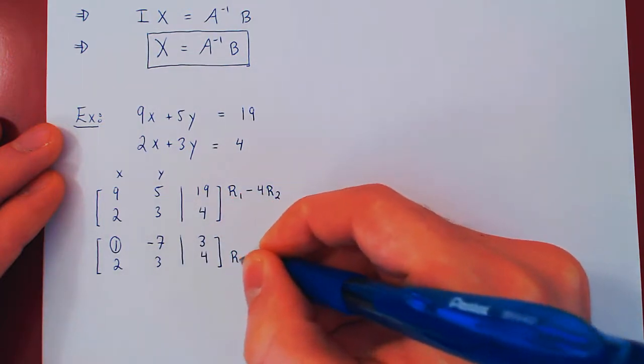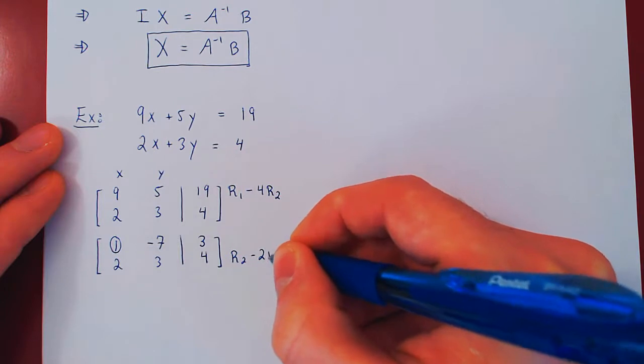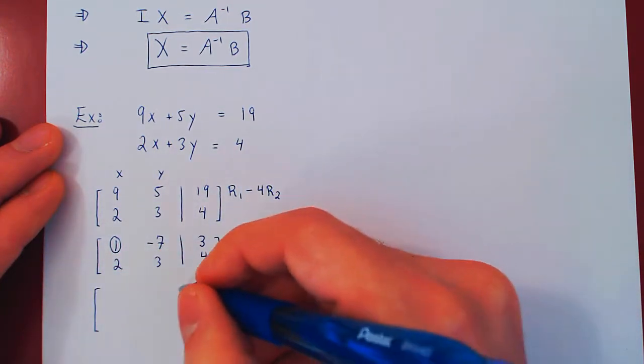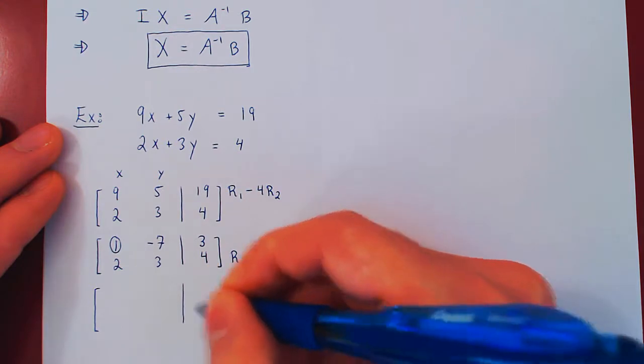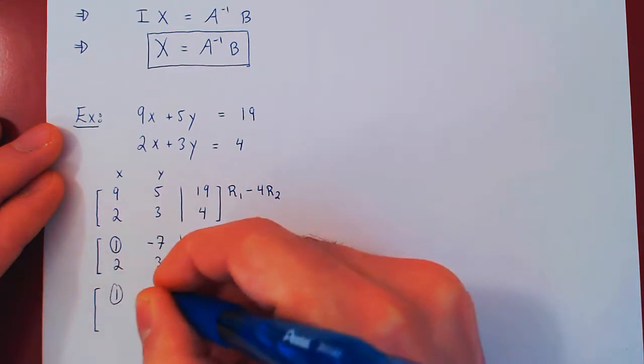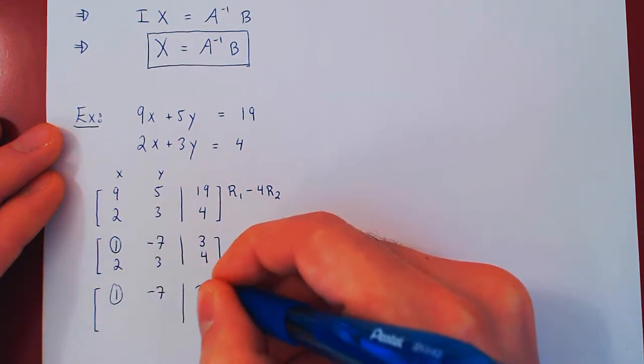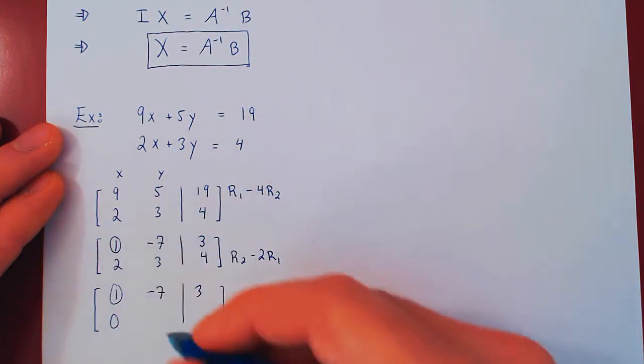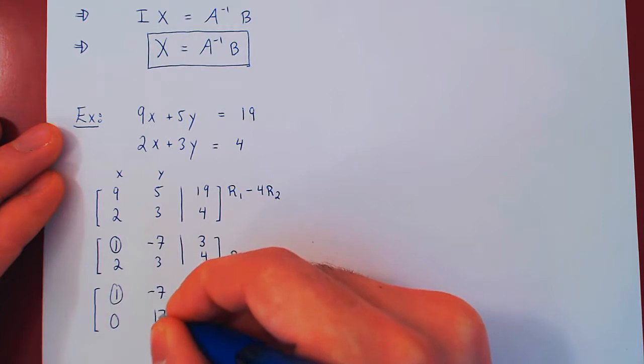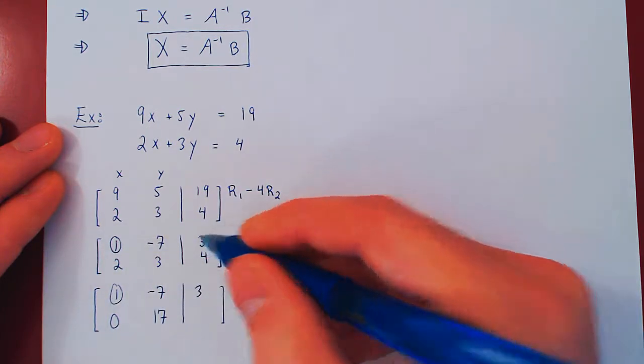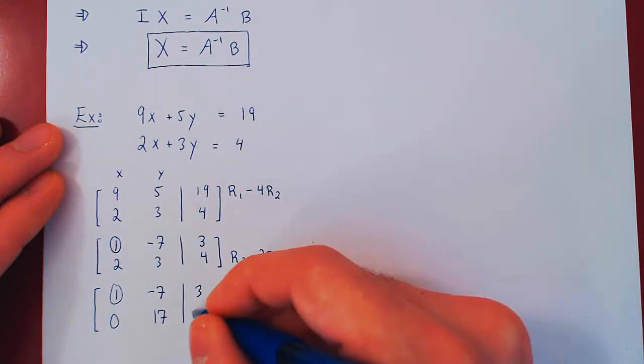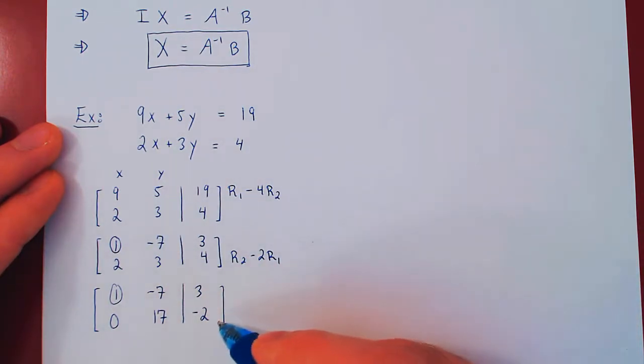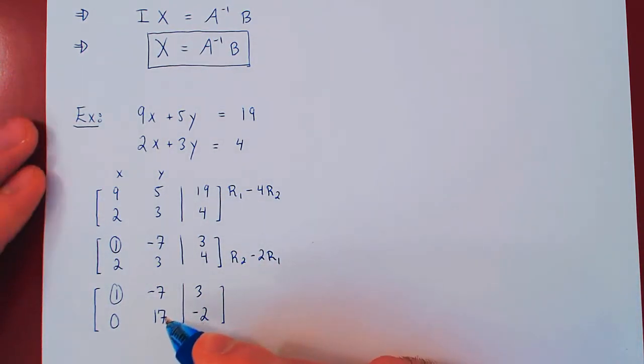We're going to kill the 2. Row 2 minus 2 times row 1. 2 minus 2 is 0. 3 minus 2 times negative 7 is plus 14, positive 17. 4 minus 2 times 3, negative 6, negative 2. Well, we'll get our second leading 1 by multiplying row 2 by 1 over 17.